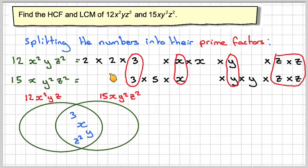What's left here? We have a 2 times 2, so it's 2². We have an x on its own there. And then over here we have a 5 and a y.